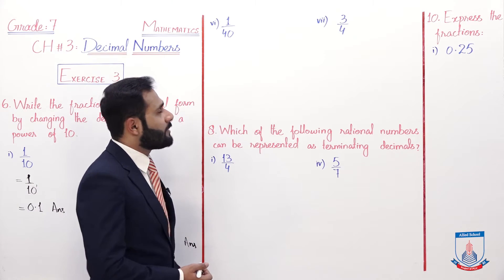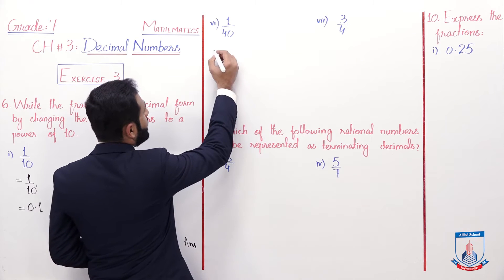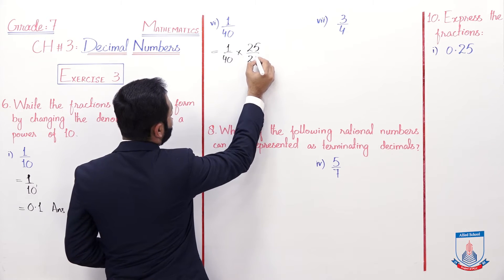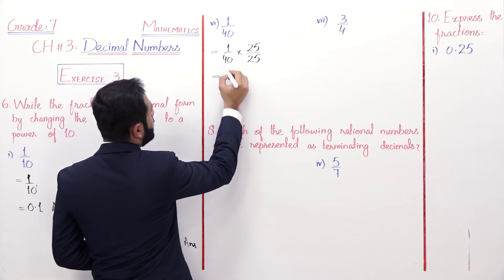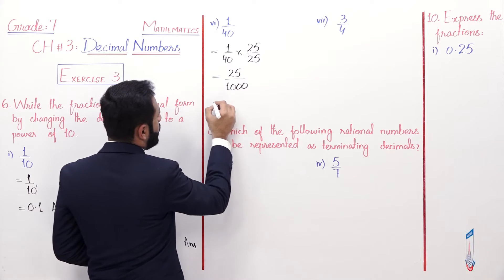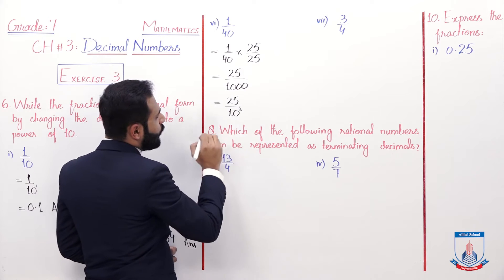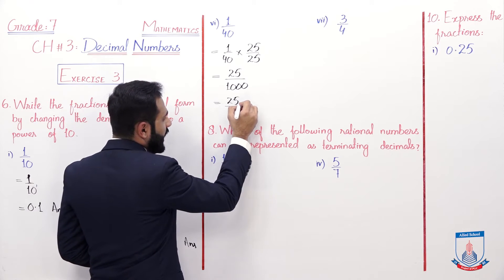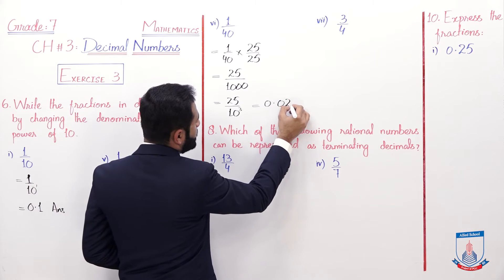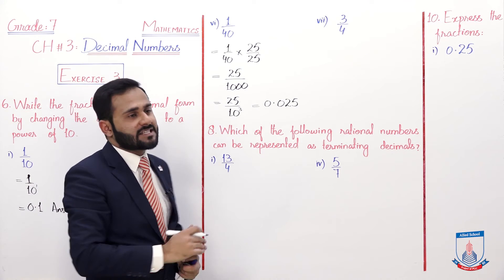The next part is 1 by 40. Yahaan bhi aapne denominator ko 10 ki power mein convert karna hai. We multiply and divide by 25: 25 ones are 25, and 40 into 25 it becomes 1000, which is 10 ki power 3. So point 3 digits peeche aayega - it becomes 0.025. So 3 digits ke baad point peeche aayega.